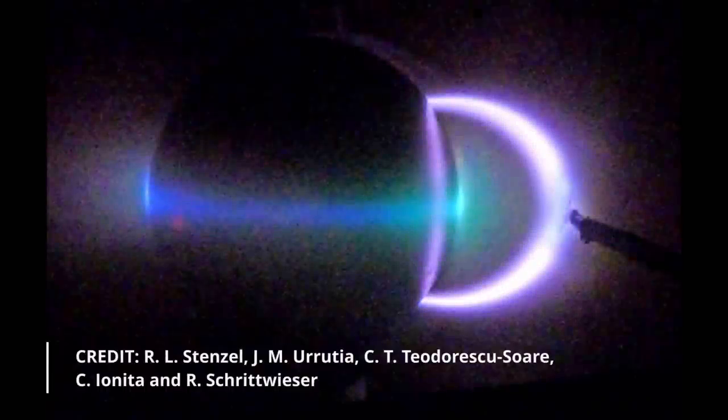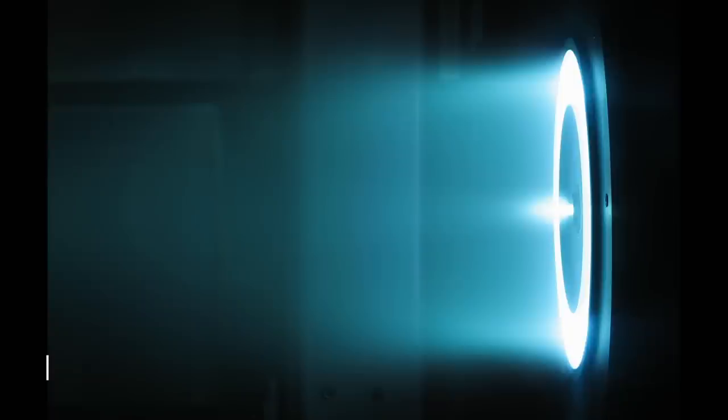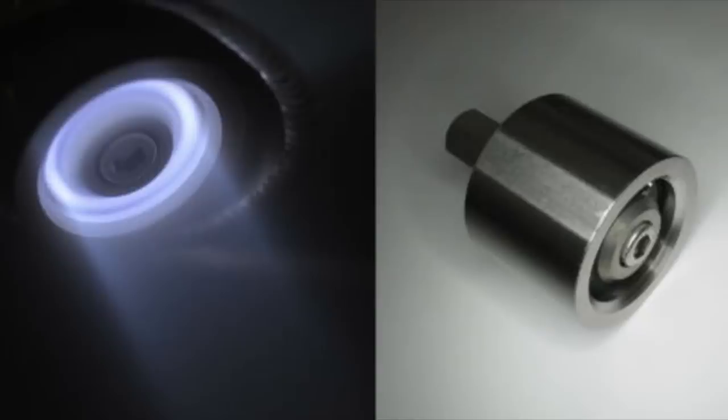Cross-field discharges are efficient plasma sources. These can be used in various applications like hall thrusters and surface coating with magnetron sputtering devices.